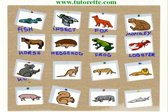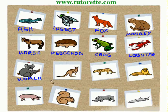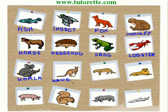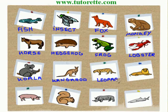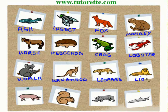K-O-A-L-A. Koala. This is a kangaroo. K-A-N-G-A-R-O-O. Kangaroo. This is the leopard. L-E-O-P-A-R-D. Leopard. The king of the animals. The lion. L-I-O-N. Lion.